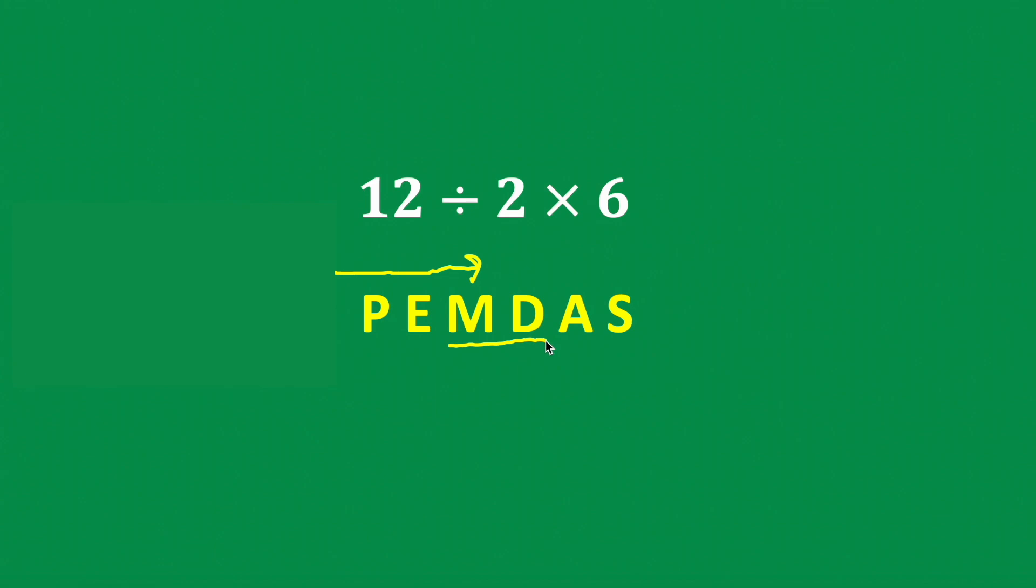Multiplication doesn't always go before division. Instead of M followed by D, it's really M or D, meaning we just go left to right, and we do whatever occurs first. So if we see multiplication followed by division, then we would do multiplication first. On the other hand, if we see division followed by multiplication, we would do the division first.